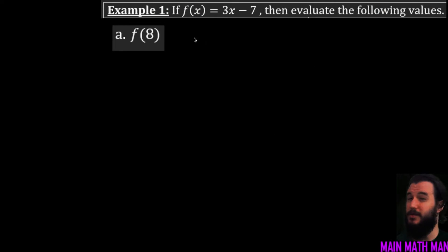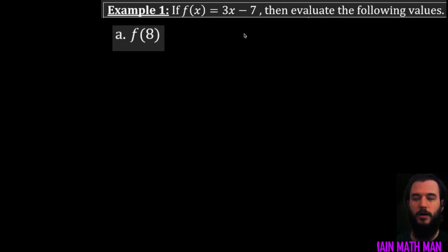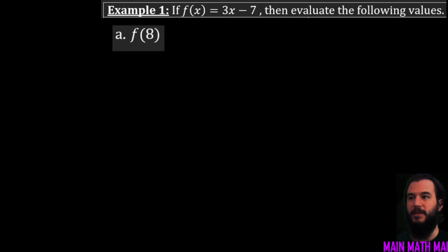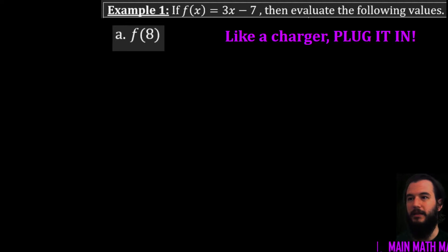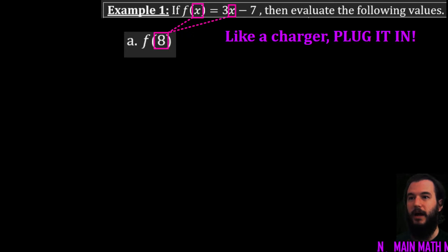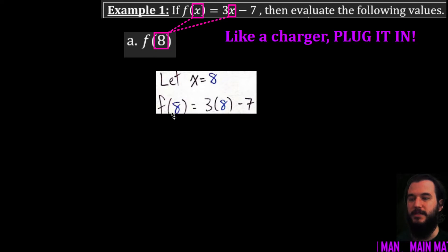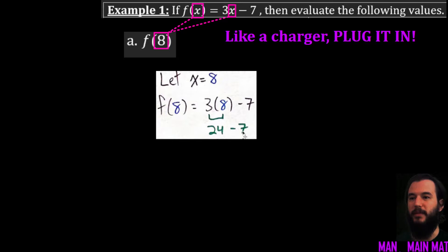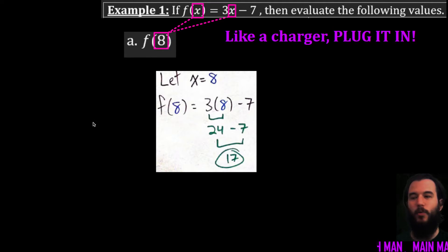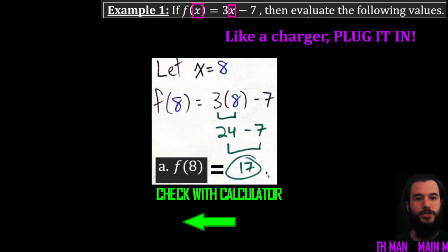In example one it says: if f of x is equal to 3x minus 7, evaluate the following values. We're asking, what is the output when x equals 8? Just like a charger — plug it in. So I let x equal 8, and wherever I have an x I now have an 8. I plug it into my function: f of 8 is equal to 3 times 8 minus 7. Using order of operations: 3 times 8 is 24, minus 7 is 17.